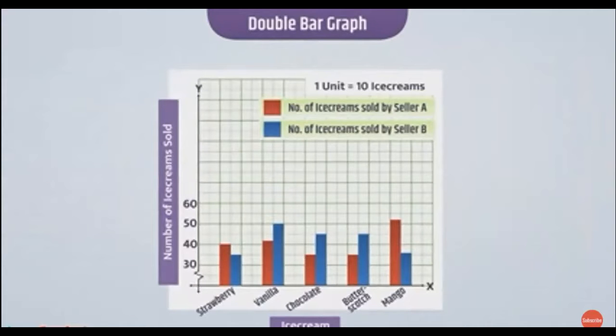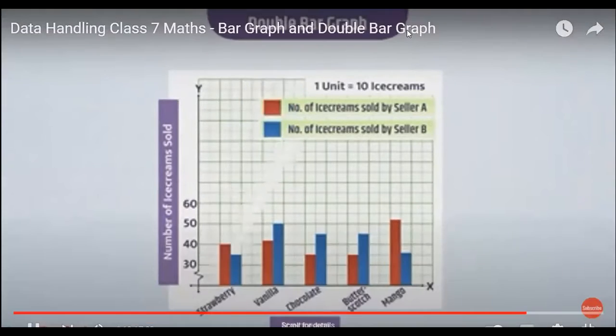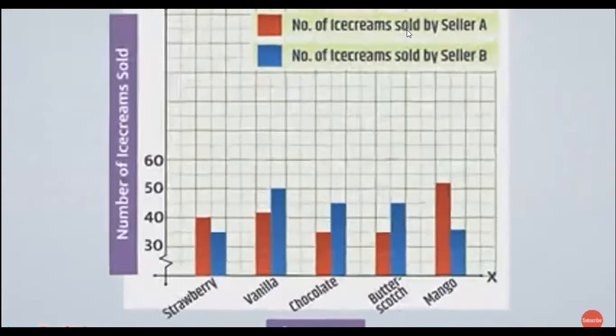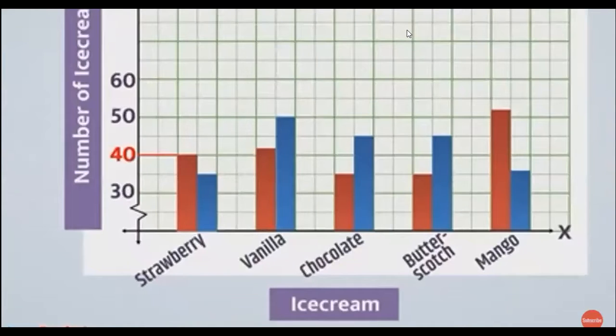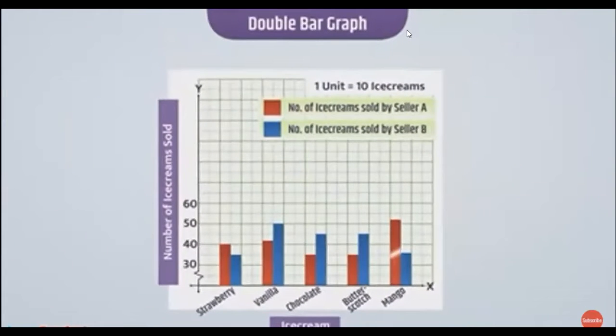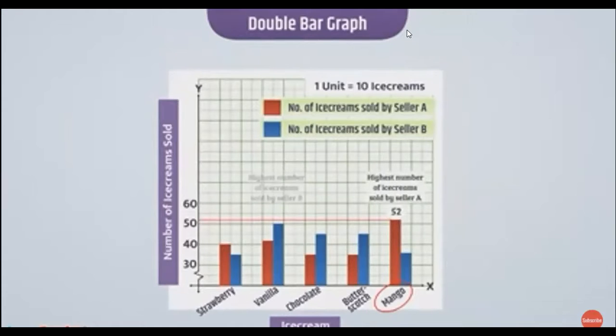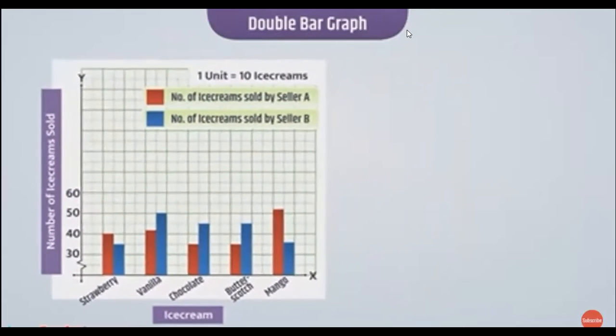Let's understand some advantages of double bar graphs. We can easily compare the sales of ice creams by 2 sellers on the same graph. For example, seller A sold 40 strawberry ice creams while seller B sold 35, which is 5 ice creams less than seller A. Highest number of ice creams sold by seller A is 52, which is mango ice creams, while highest number sold by seller B is 50, which is vanilla ice creams.